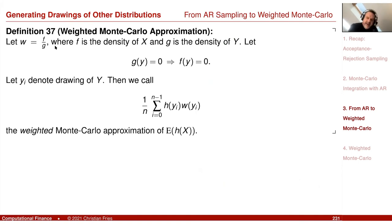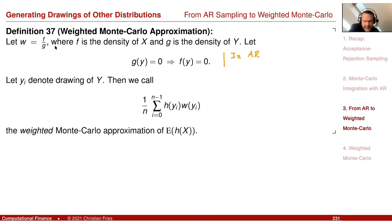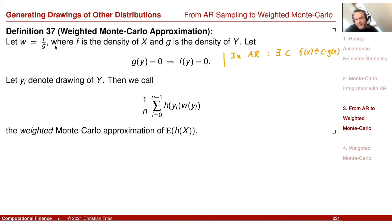To do this in general, we need a criterion: when the density g is 0, the density f must also be 0. This criterion was fulfilled in acceptance-rejection sampling, where there exists a constant c such that f(x) ≤ c · g(x). You can see that if g is 0, then f has to be 0.